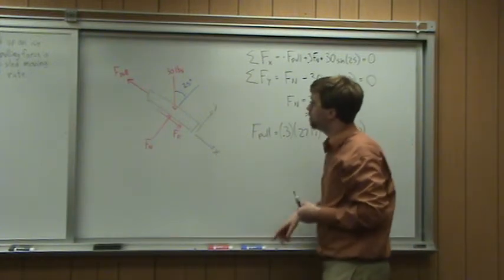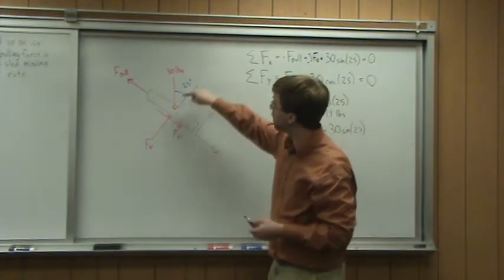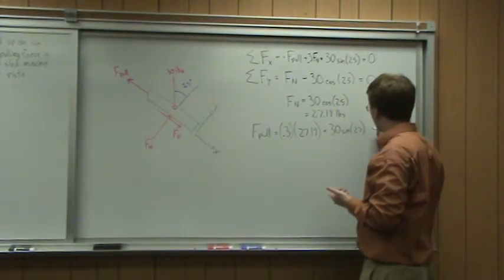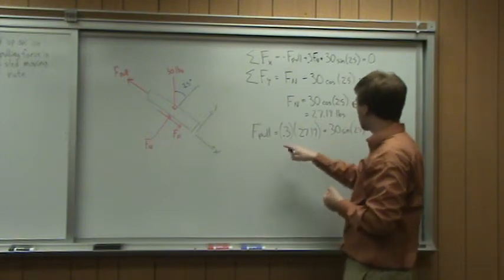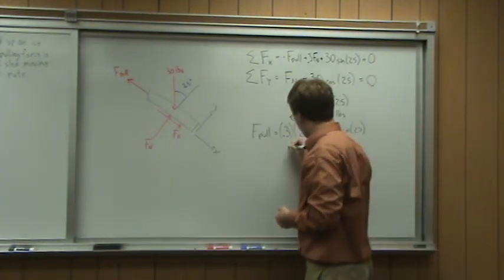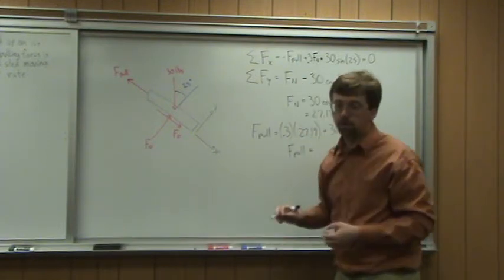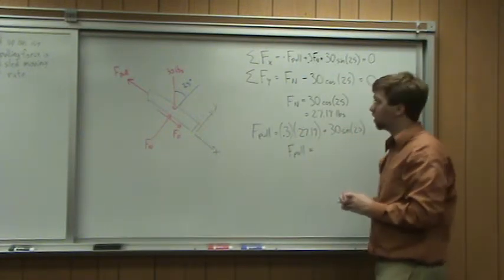When I pull this uphill, I'm fighting not only the friction force but also the gravity force pulling this up. That's going to be my pulling force. These are all numbers. If I plug all this in, I should get F pull equals 20.84 pounds.